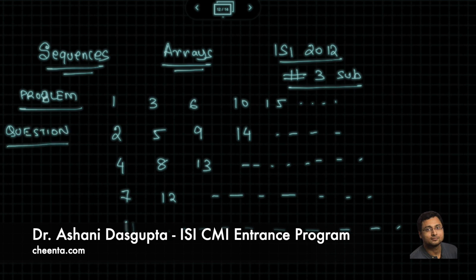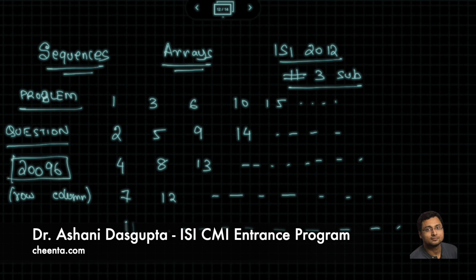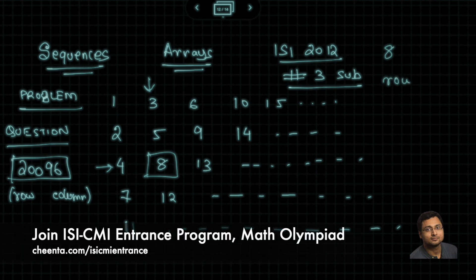The question is: what is the position of the number 20096? You have to find the row number and the column number of this particular value. For example, for the number 8, the row is 3 and the column is 2.